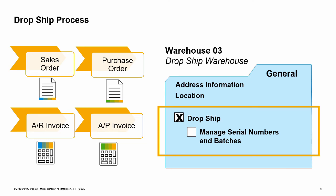No journal entry is made to reflect inventory value changes. Therefore, the drop ship warehouse is not displayed on inventory reports. To set up a warehouse, mark the drop ship checkbox. If you would like to include the ability to track serial numbers or batches in a drop shipment, then also mark the manage serial numbers and batches checkbox.